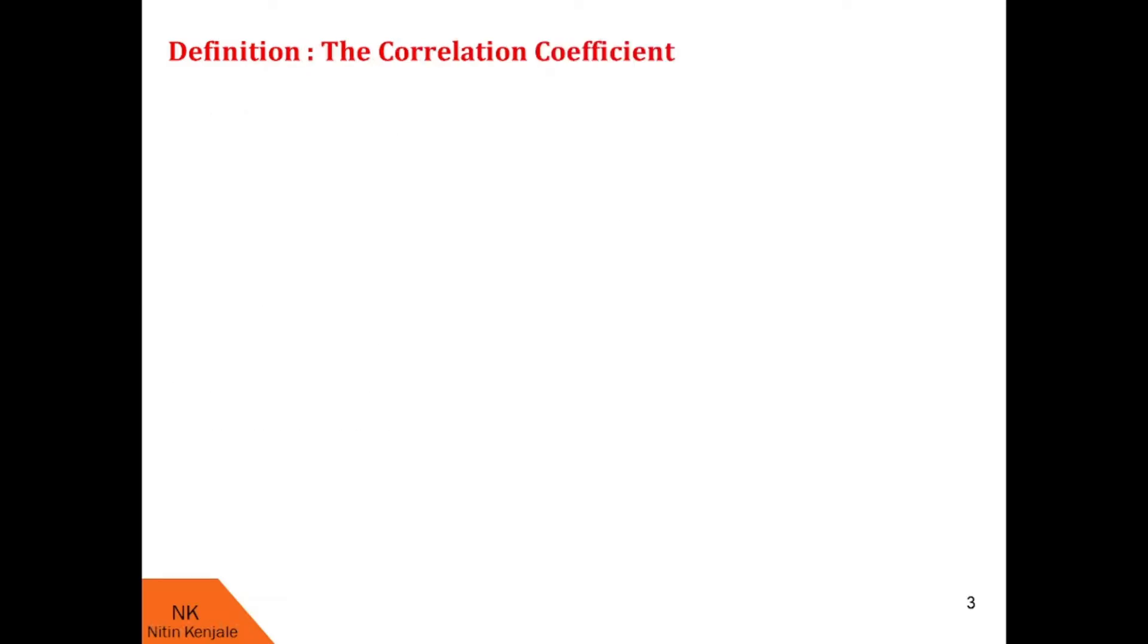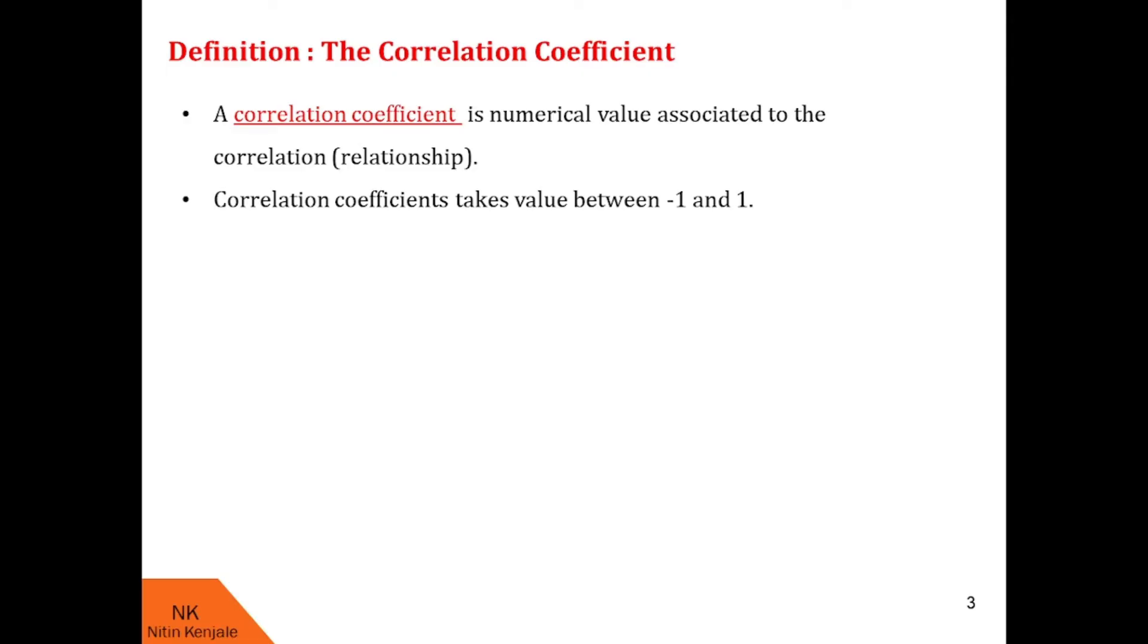Now let us see what is correlation coefficient. It is the numerical value associated to correlation or relationship. Correlation coefficients take value between minus 1 and 1. A zero correlation coefficient means there is no relationship at all between the variables under observation.